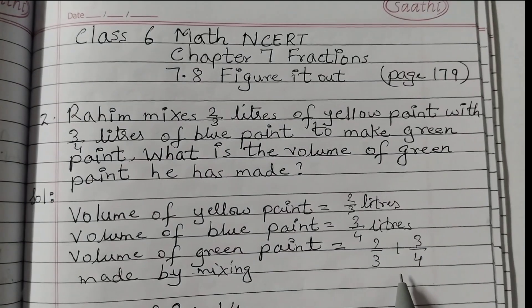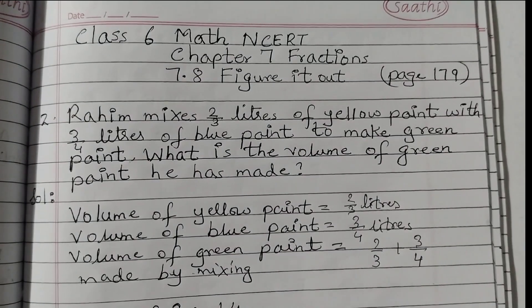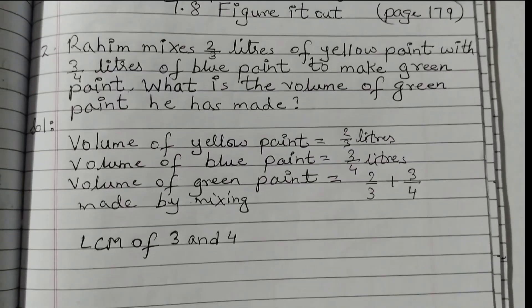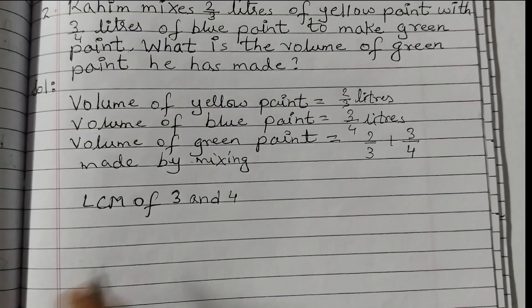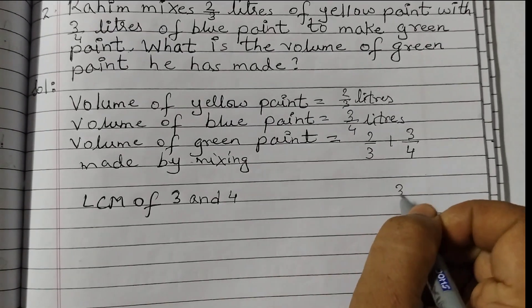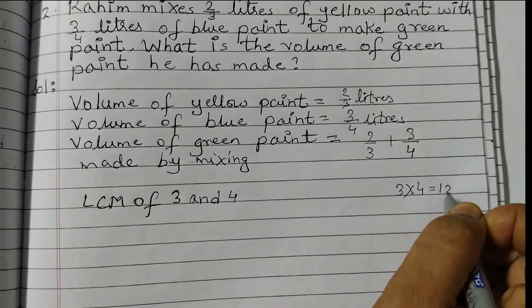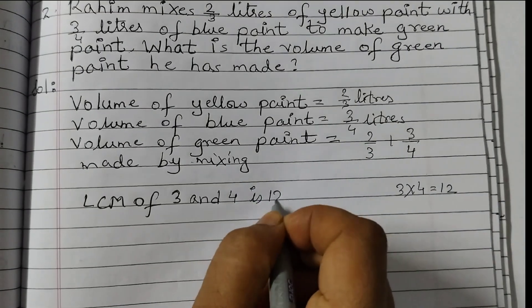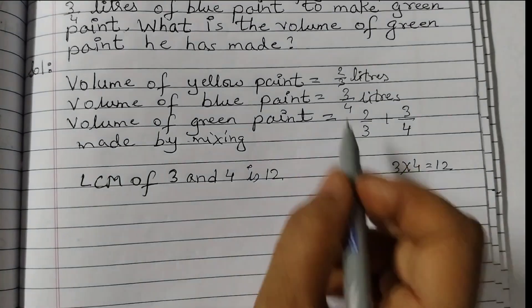The denominators are different, so we need a common denominator. We will find the LCM of 3 and 4. LCM of 3 and 4 is 3 × 4 = 12.